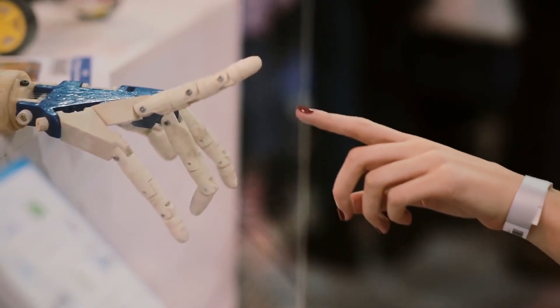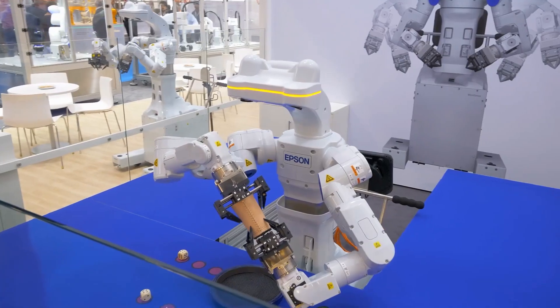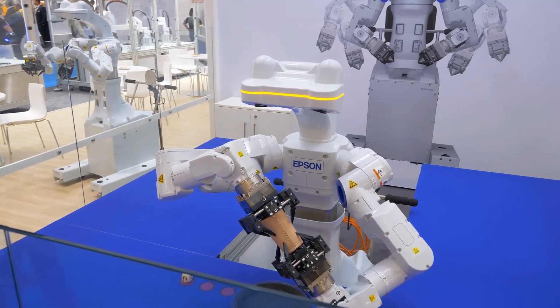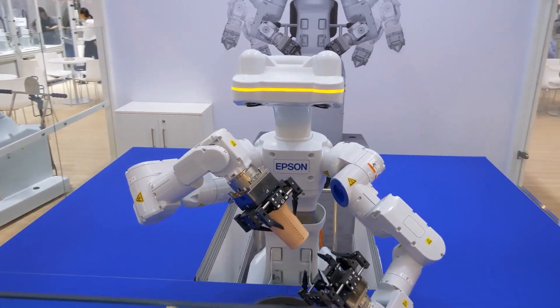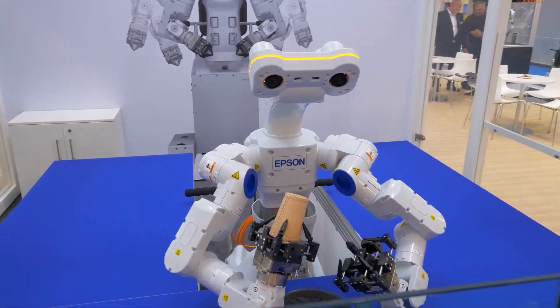In addition, policies to support job transition can also be implemented, such as training subsidies, job retraining programs, and employment guarantees for those who lose their jobs due to automation.